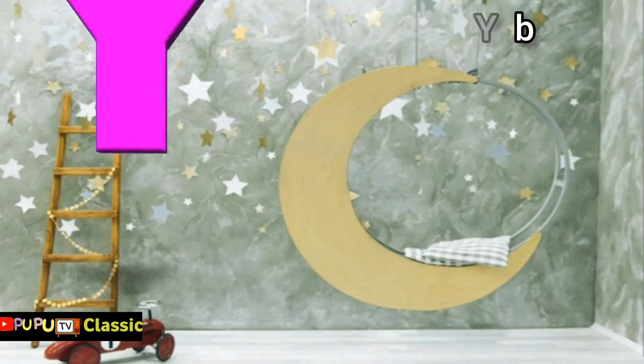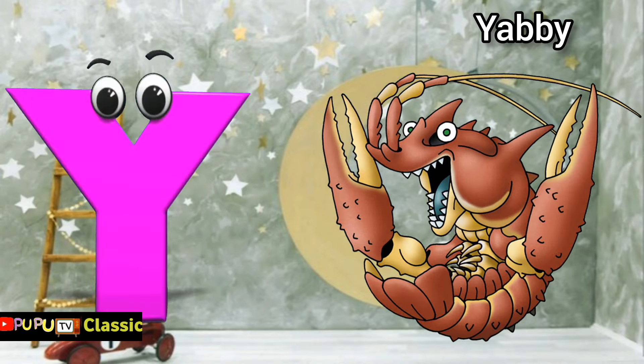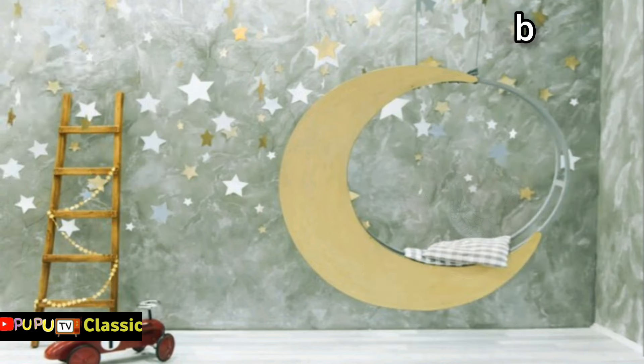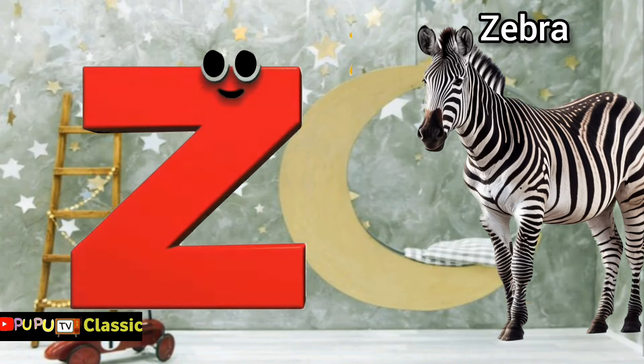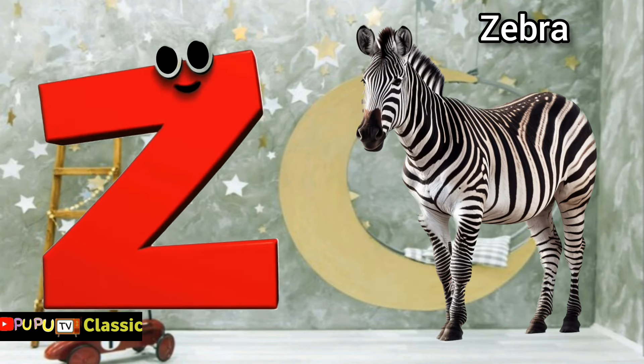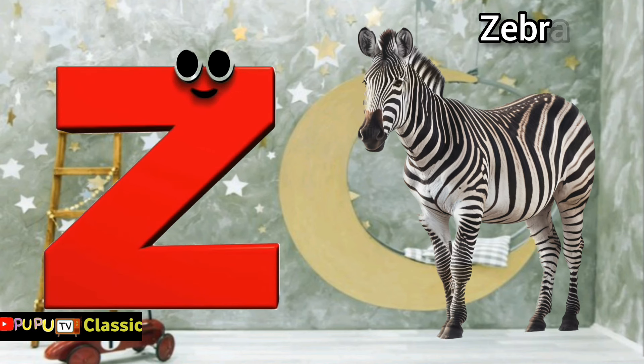Y is for yabby, y-yabby. Z is for zebra, z-z-zebra.